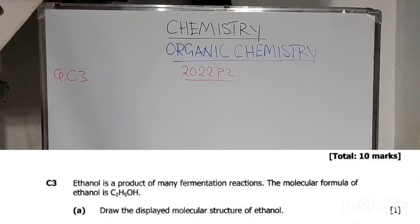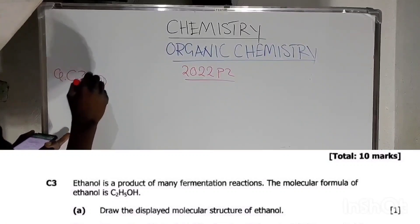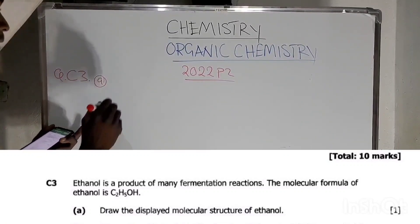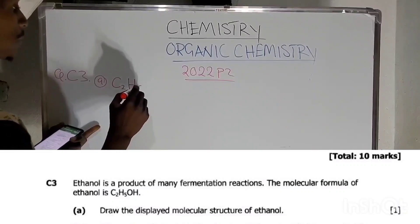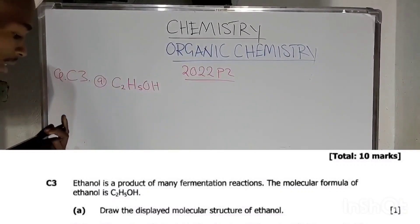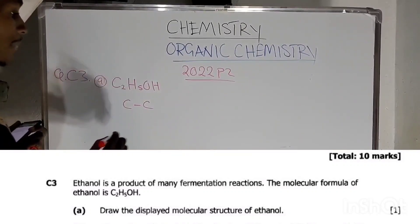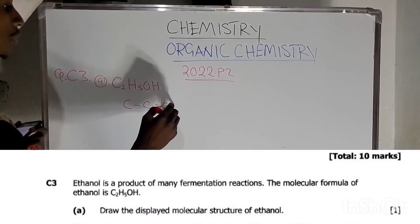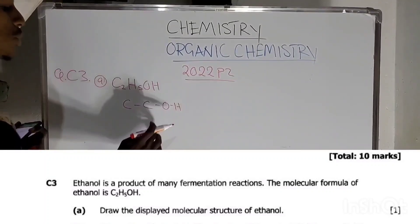Here is the question under fermentation. Ethanol is a product of many fermentation reactions. The molecular formula of ethanol is C2H5OH. The first question asks you to draw the displayed molecular structure of ethanol. You always start with the carbon atoms — two carbons — and on the end you add the hydroxyl group OH.